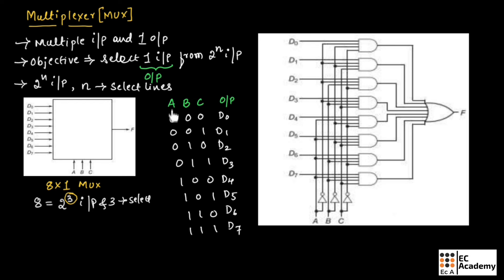For A, B, and C, we require both the variable as well as its complement. That is why we have taken A as well as A-bar. Since we connect a NOT gate, on one line we get A and on the other line we get A-bar. In the same way, we get B and B-bar, and C and C-bar. To get the output as D0, the value of A, B, C should be 0, 0, 0, so we make the select lines A-bar, B-bar, C-bar.